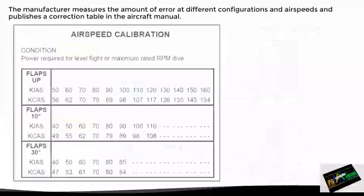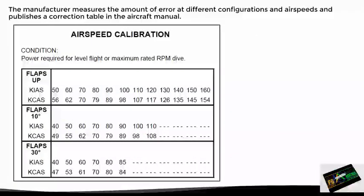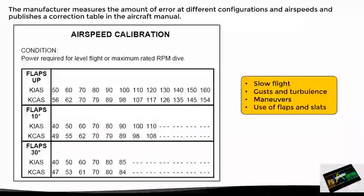These errors are taken into account by the manufacturer in different configurations and speeds, to publish a correction table in the aircraft manual. This calibration table corresponds to the airspeed indicator, since it is the only instrument to which the pitot tube is connected. We will see this in more detail in the specific video about the airspeed indicator. But in summary, we must bear in mind that we will have slight errors in the indication of airspeed when performing maneuvers such as slow flight, flying in gusty or turbulent conditions, or when using flaps or slats.